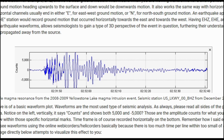A short period station, for example EHZ, shows vertical ground motion. That means when you are viewing waveforms for a short period vertical channel, up would be ground motion heading towards the surface, and down would be downward motion. It also works the same way with horizontal channels. Horizontal channels usually end in E for east-west ground motion, or end in N for north-south ground motion.